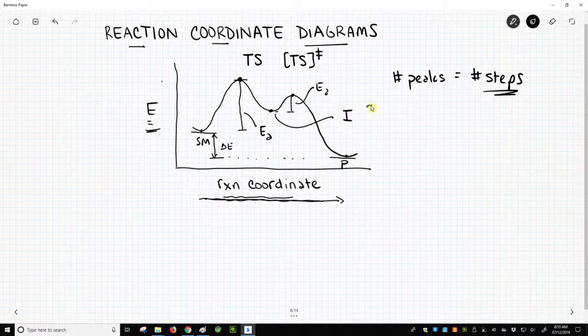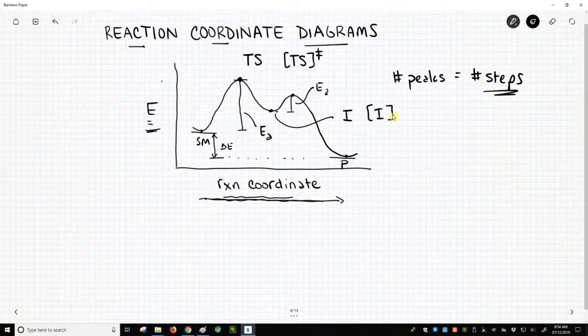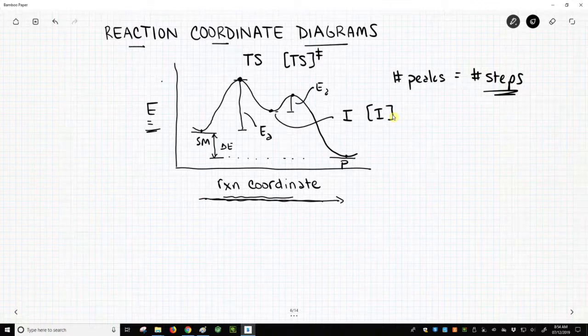Some people will write I. Oftentimes though, they will put it in brackets without the double dagger symbol. So that's a symbol for an intermediate.